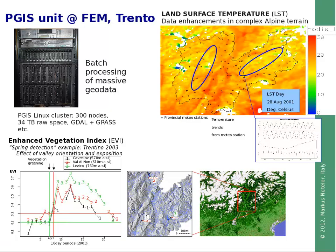Our workgroup — the GIS and Remote Sensing Unit at the Foundation Mach — is specialized in processing massive amounts of geospatial data. Luckily, there are huge amounts of US satellite data freely available. There are also European data sources, but they are much more difficult to obtain. An interesting sensor is MODIS, which is flown on the Aqua and Terra satellites.